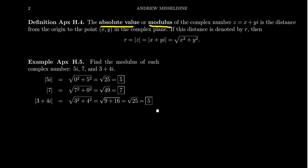The modulus is sometimes called absolute value because we use the same notation to describe the modulus of a complex number as we do the absolute value of a real number. When we realize that real numbers are just special types of complex numbers, this really is extending the usual notion of absolute value. So the modulus of a complex number is the distance that complex number is from the origin in the complex plane.